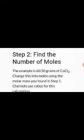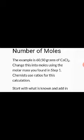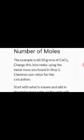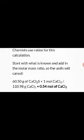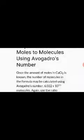The next step is to find the number of moles. The mass given is 60.50 grams. We calculate moles using the formula: moles = mass ÷ molar mass. So 60.50 grams divided by 110.98 g/mol gives us 0.5454 moles of calcium chloride.